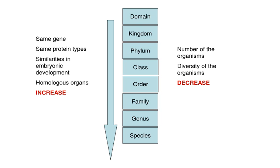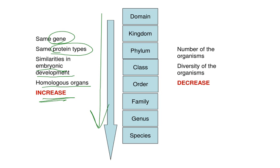From domain down to species, gene similarities, protein similarities, embryological development similarities, and homologous organ similarities all increase. However, the number and diversity of organisms decreases from domain to species — species contain only one type of organism, while domains may contain many different types.